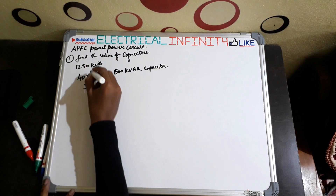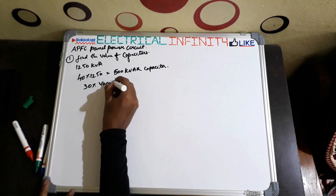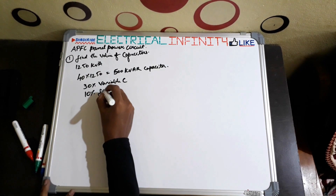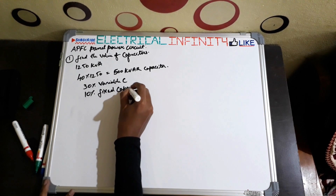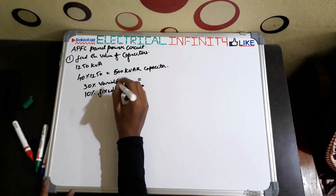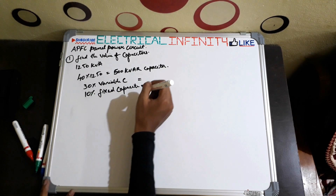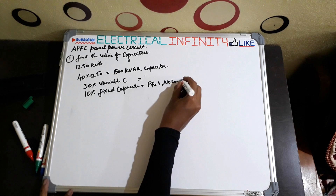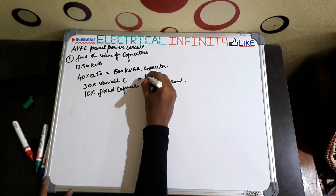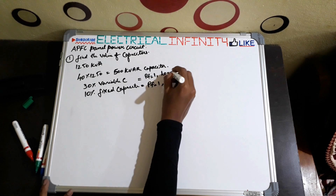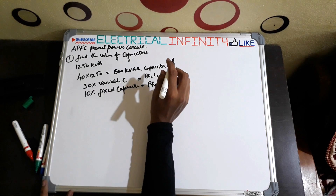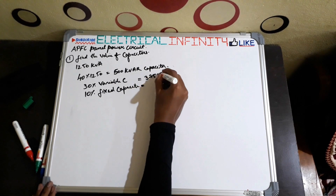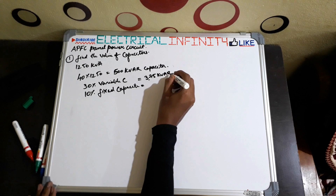30% of 1250 kVA will be used as variable capacitor and 10% of 1250 kVA is used as fixed capacitor. The 10% fixed capacitor maintains power factor to unity when there is no load, whereas the 30% variable capacitor maintains power factor equal to unity when there is a load. The 30% of 1250 is 375 kVAr of variable capacitors, and 10% is 125 kVAr of fixed capacitors. Hence the first step is completed.